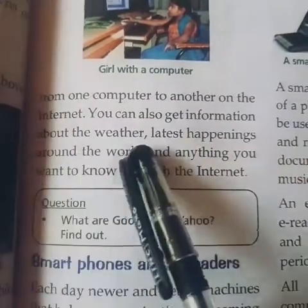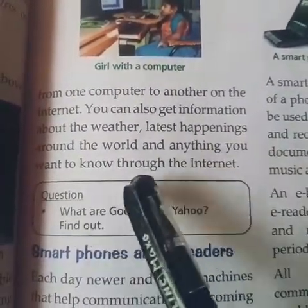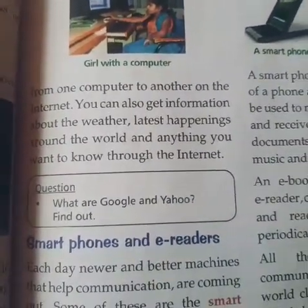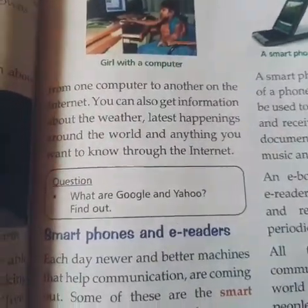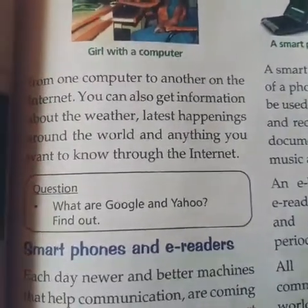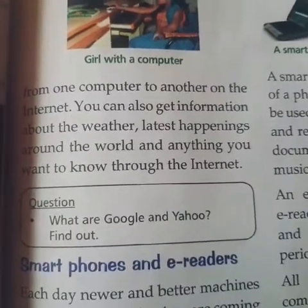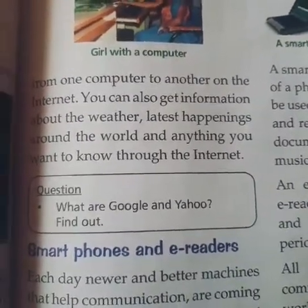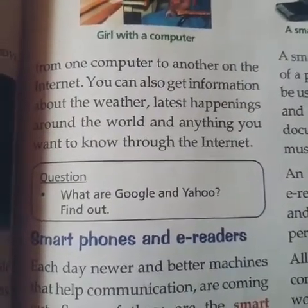You can also get information about the weather, the latest happenings around the world, and anything you want to know through the internet. Whatever is happening in the world, we can find out on the internet. Whatever you want, you can browse the internet to find information about the whole world.